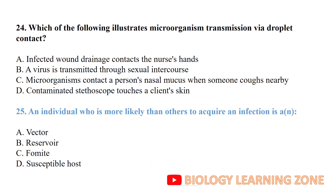Which of the following microorganisms are transmitted via droplet contact? Droplet contact occurs when someone coughs nearby and the mucus contacts a person — when distance is within range for droplet precautions. Who is more likely than others to acquire an infection? The susceptible host.